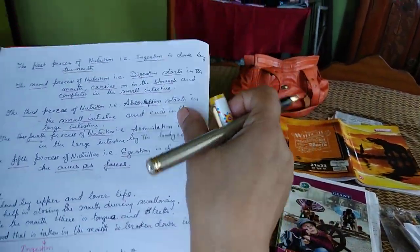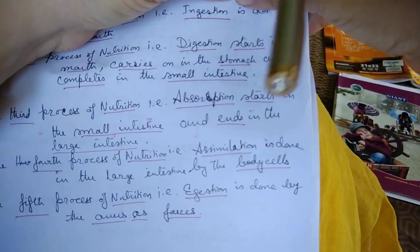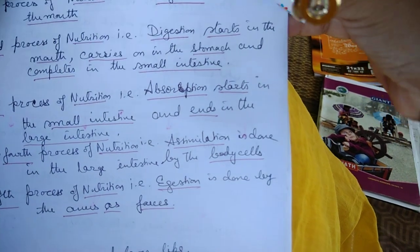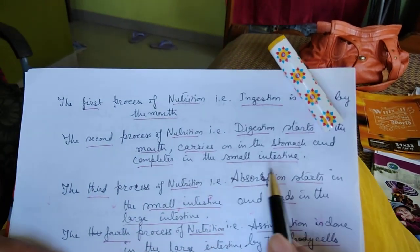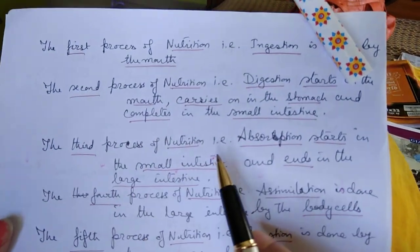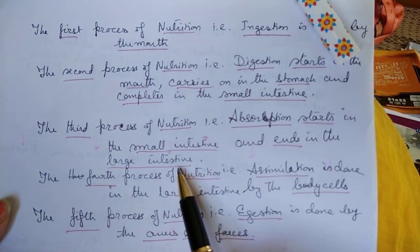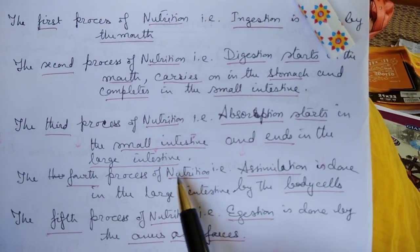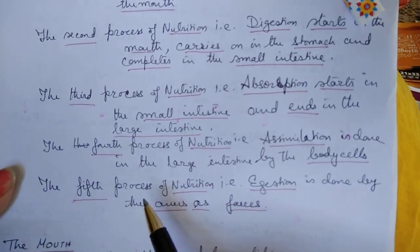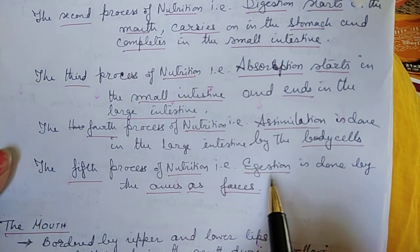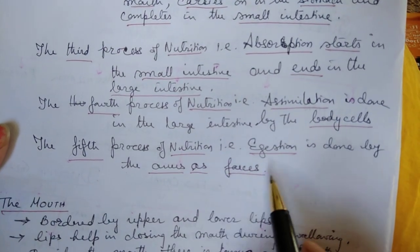The first process of nutrition is ingestion, done by the mouth. The second process, digestion, starts in the mouth, continues in the stomach, and completes in the small intestine. The third process, absorption, starts in the small intestine and ends in the large intestine. The fourth process, assimilation, is done in the large intestine by the body cells. The fifth process, ejection, is done through the anus as feces.